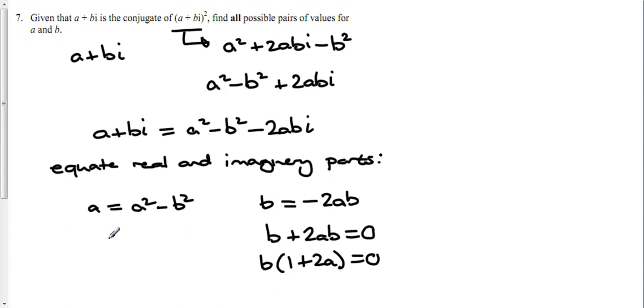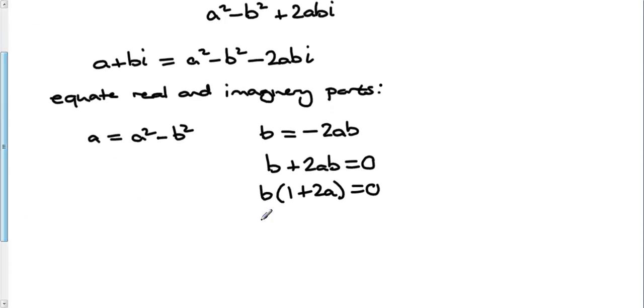We've got that b could be 0, or 1 plus 2a could be 0, which would mean that a would be minus a half by taking away 1 and dividing by 2. So we've got two possible values then to plug into this left hand one.